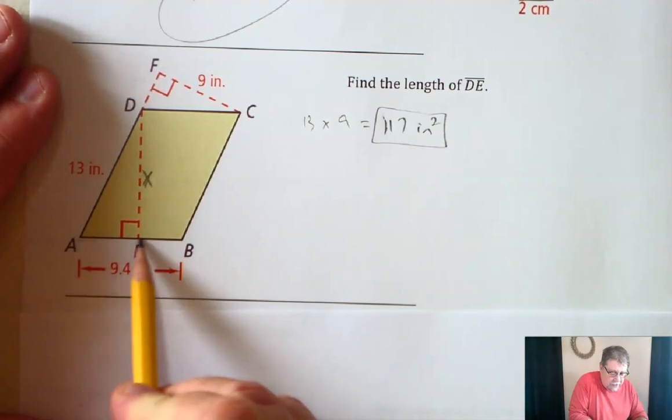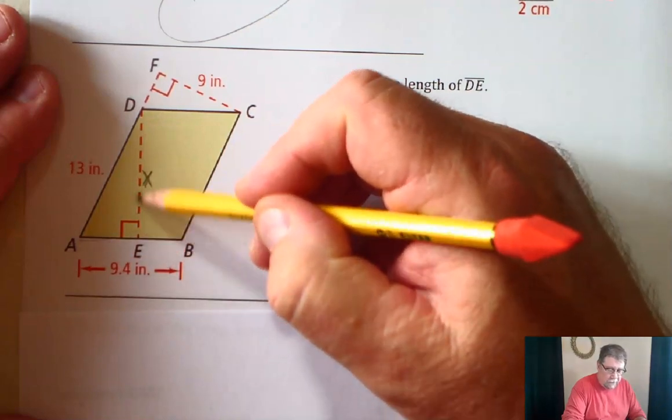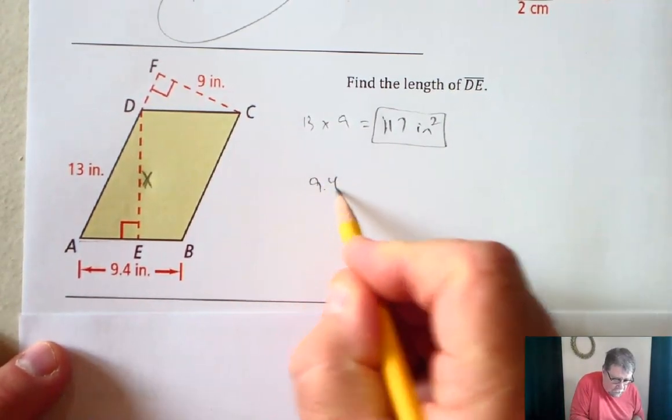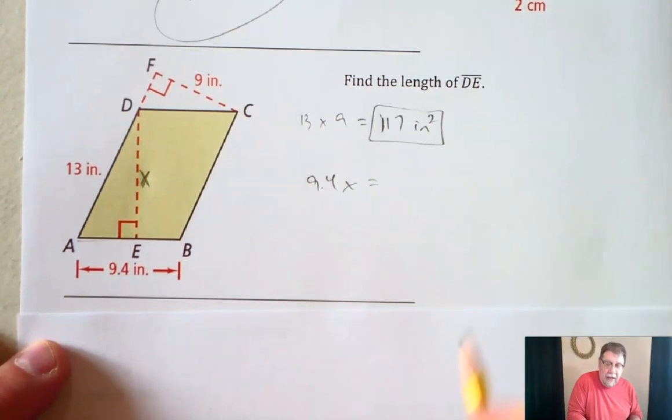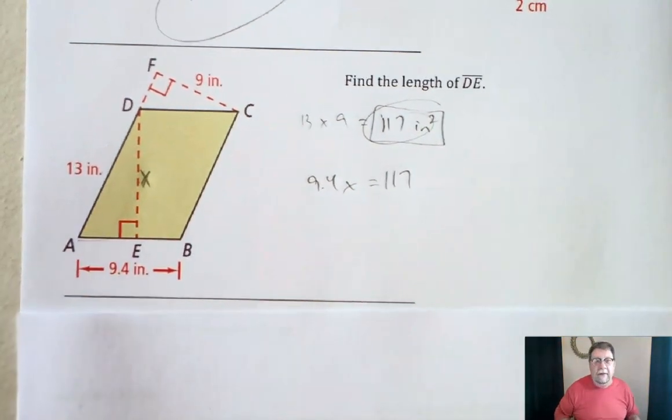This other base is 9.4. This height is X, but if I multiply the 9.4 times the X, that would also give me the area. So I'm going to write 9.4 times X will have to equal, and it'll have to equal 117, which is what we found out the area of the parallelogram was.